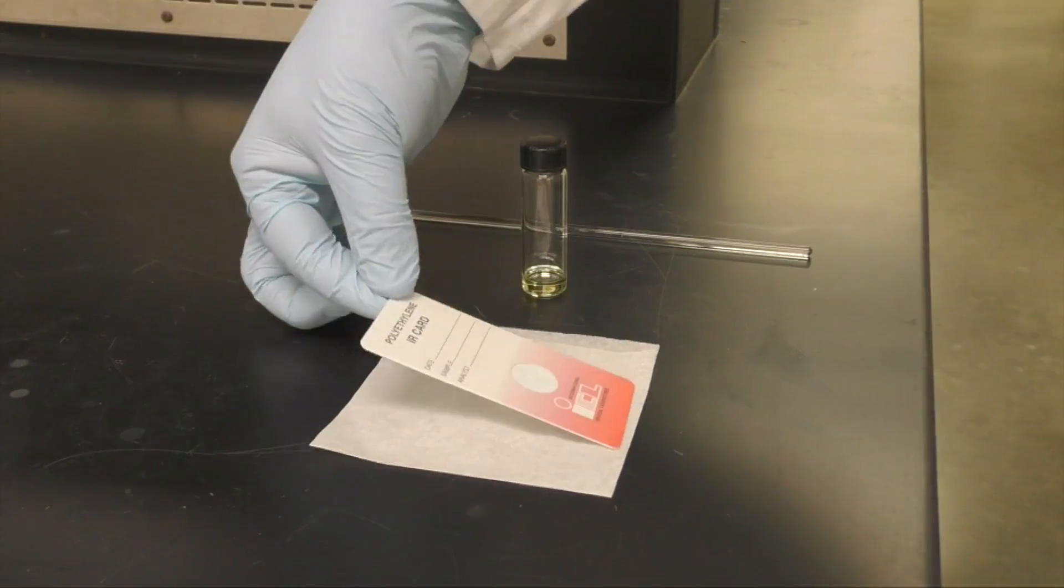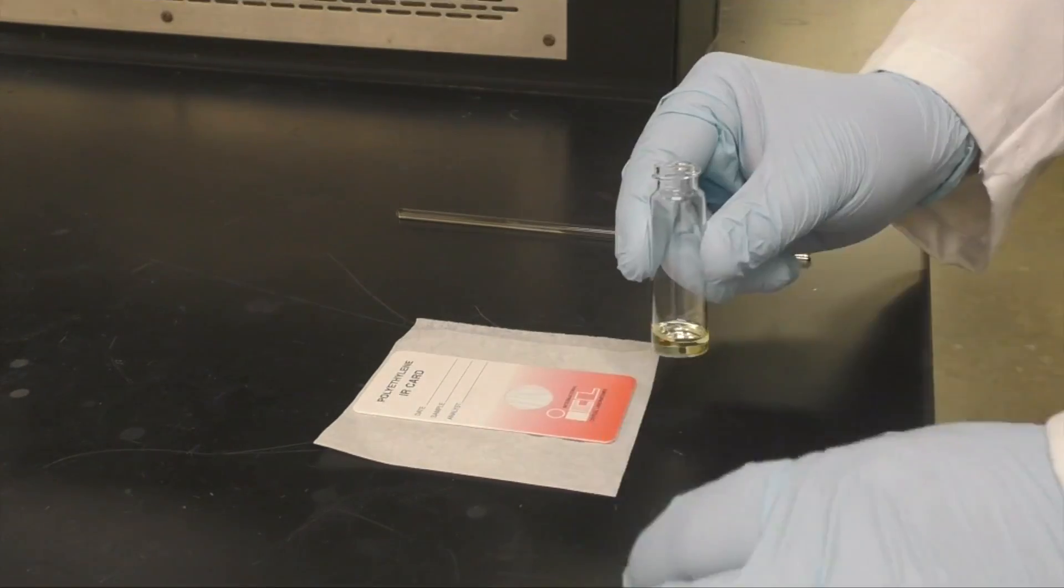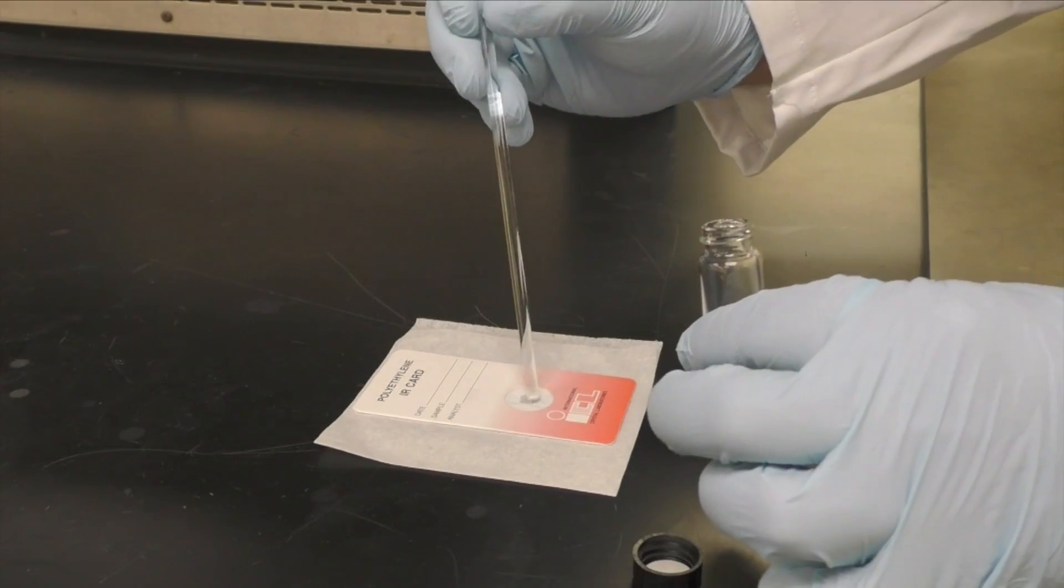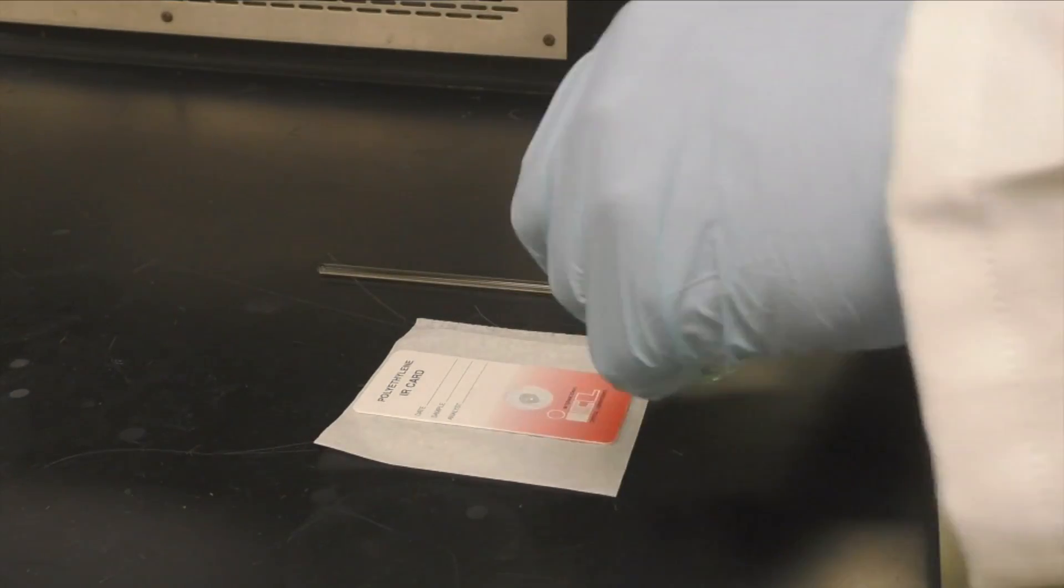For a liquid sample, dip the rod into the vial and use the spot and swirl method. You should have an obvious spot without the liquid running down the card.